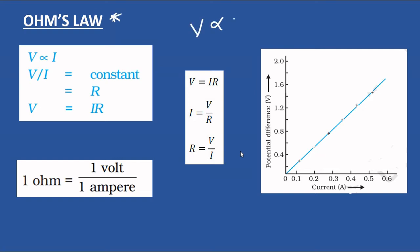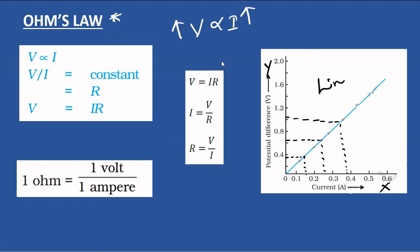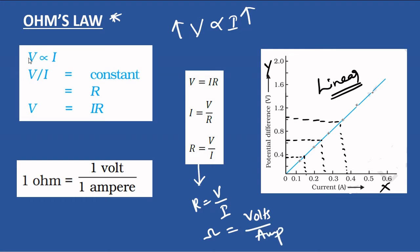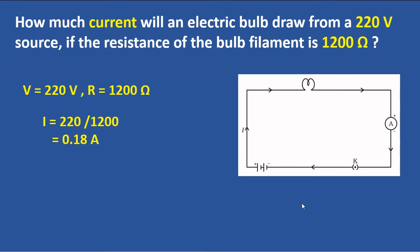Now Ohm's Law — very important. Voltage is directly proportional to current. If you observe the V-I graph, voltage is on the y-axis and current is on the x-axis. As voltage increases, current increases, so the graph is linear in shape. Also, 1 ohm = 1 volt, and R = V / I, where resistance R is in ohms, voltage in volts, and current in amperes.